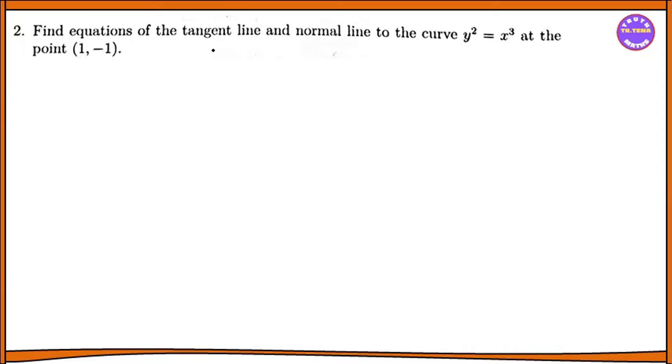Find the equation of the tangent line and normal line to the curve y squared equals x cubed at the point (1, -1). So at the point x equals 1, y equals negative 1. Now, y squared equals x cubed.